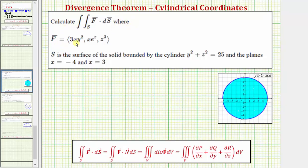The vector field F is given and the surface S is the solid bounded by the cylinder y² + z² = 25 and the planes x = -4 and x = 3.